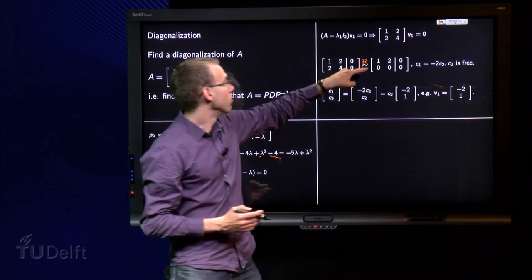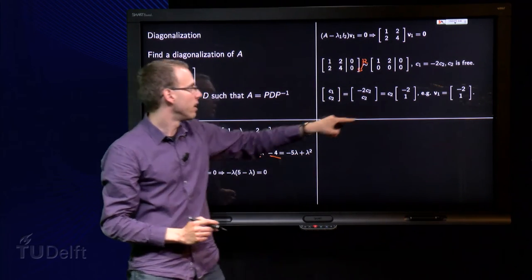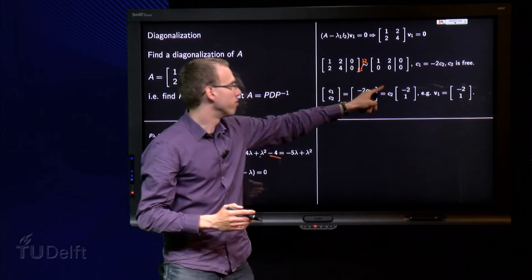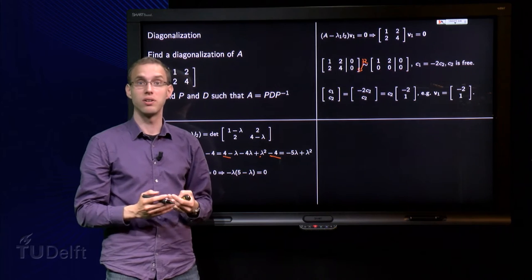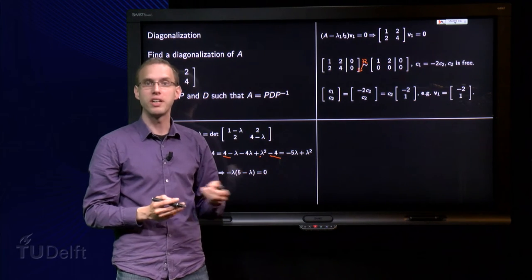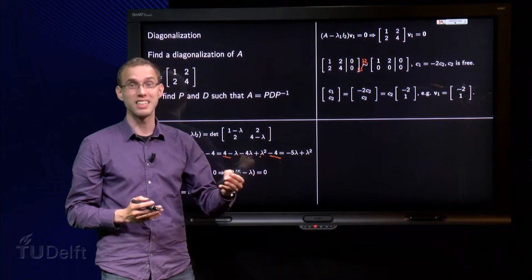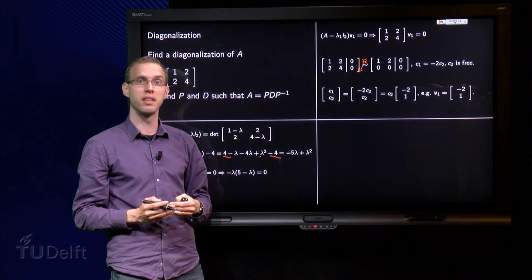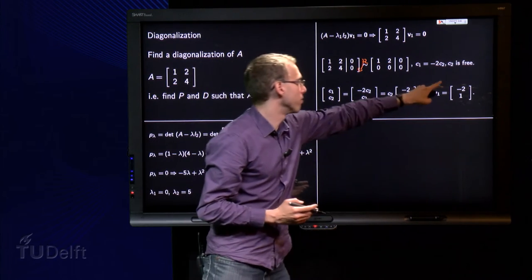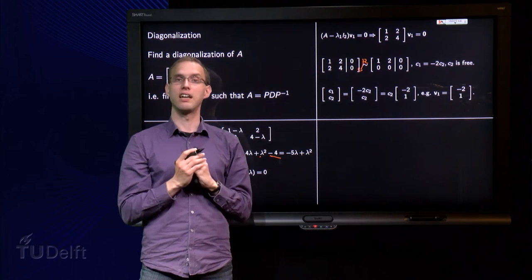Well, any solution of this problem, this matrix times vector equals zero vector, is of this form over here. So, any multiple of minus 2, 1 is an eigenvector of A with eigenvalue zero. Or any, almost any. You cannot take C2 equals zero, because a zero vector is never an eigenvector. So, we take for example C2 equal to 1, and we find our first eigenvector, minus 2, 1.